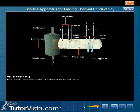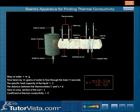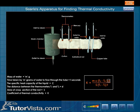Knowing m, c, and the temperatures, we can calculate the coefficient of thermal conductivity using the formula: k = (m × c × (T3 − T4) × d) / (s × (T1 − T2) × t), where m is the mass of water, k is the coefficient of thermal conductivity, c is the specific heat capacity, d is the distance between the thermometers, and s is the cross-sectional area of the rod.